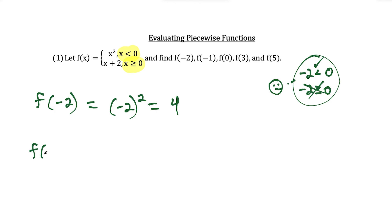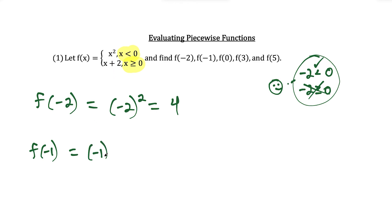For f of negative one, we go through the same thought process. We ask ourselves: is negative one less than zero, or is negative one greater than or equal to zero? Since negative one is less than zero, we plug into the top piece — negative one in parentheses squared — and this works out to positive one.